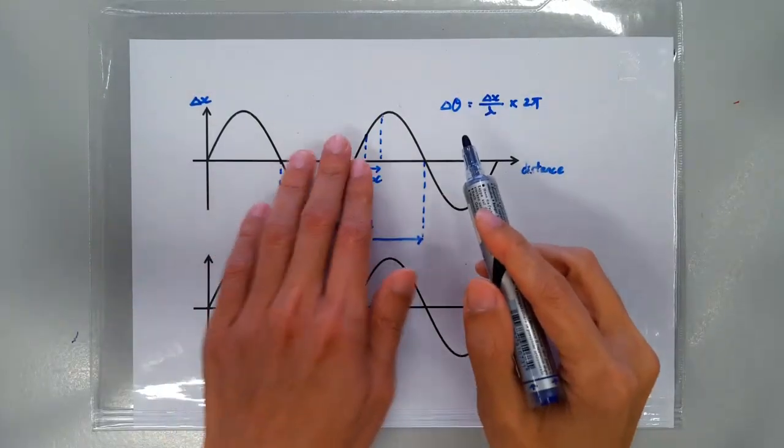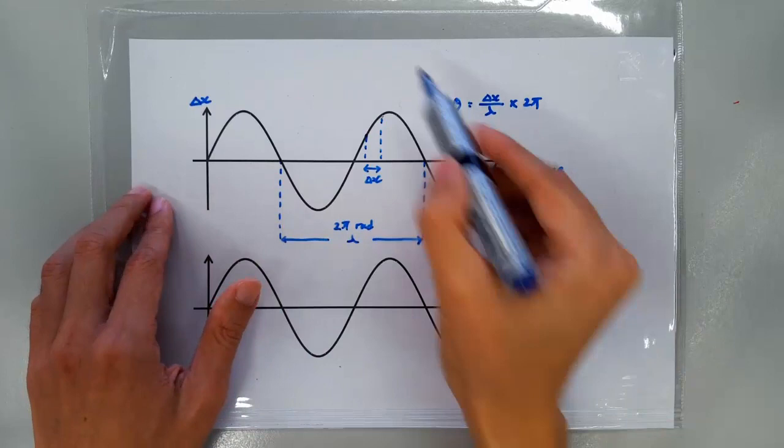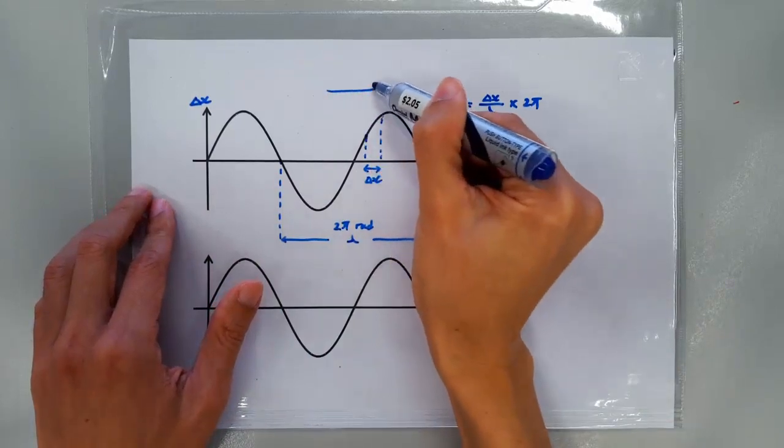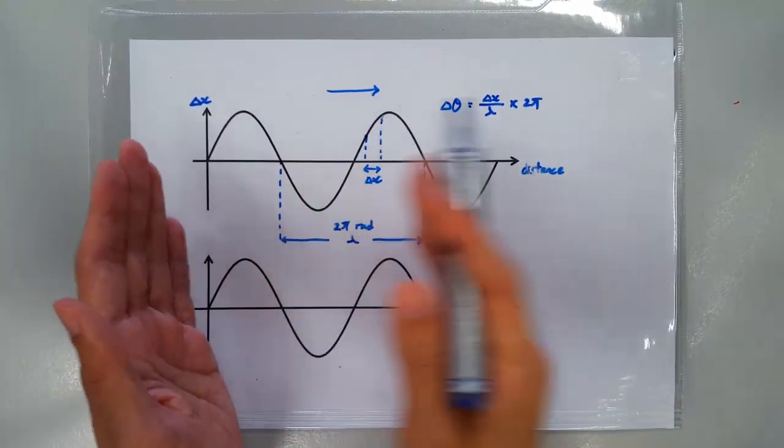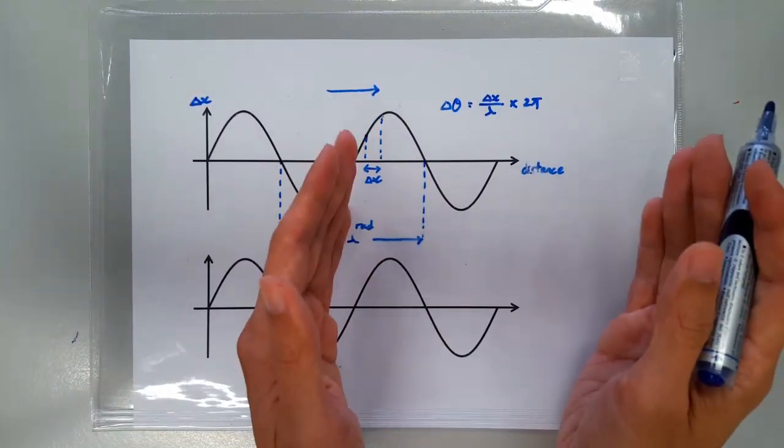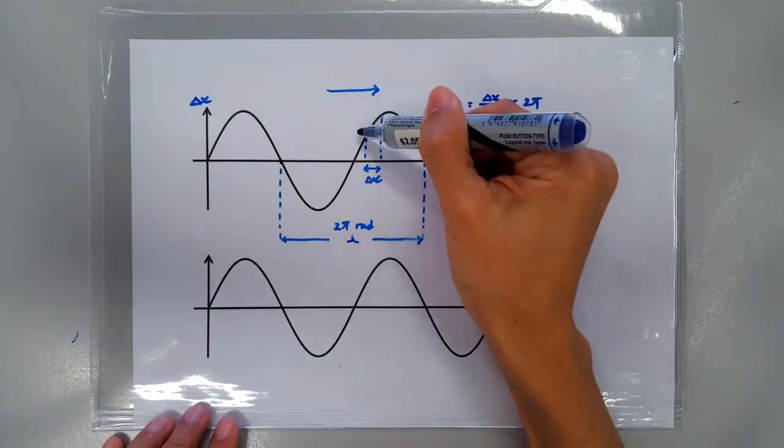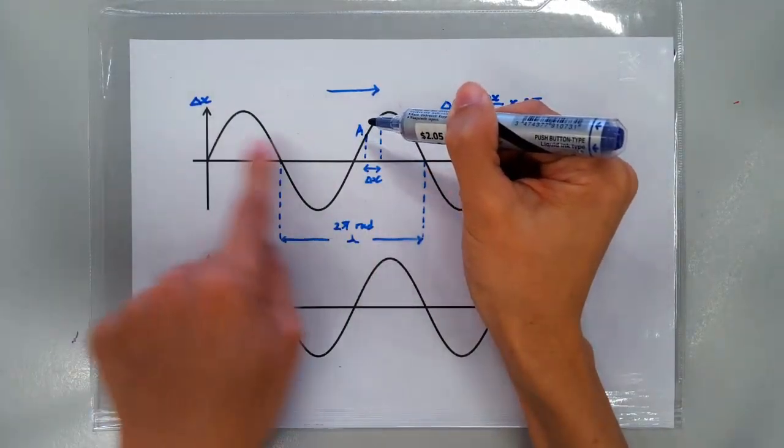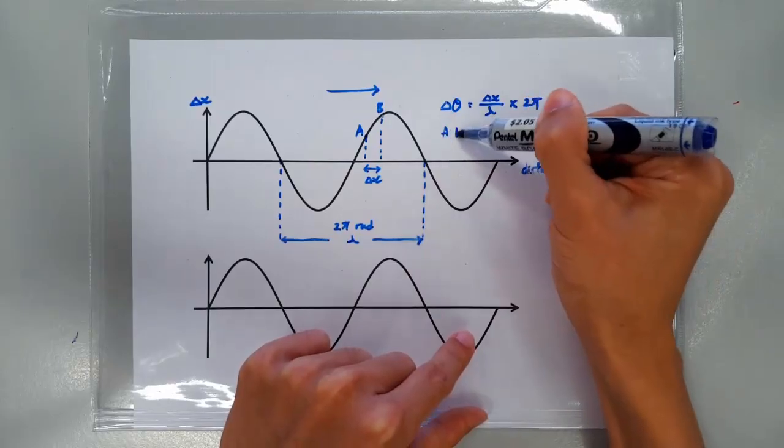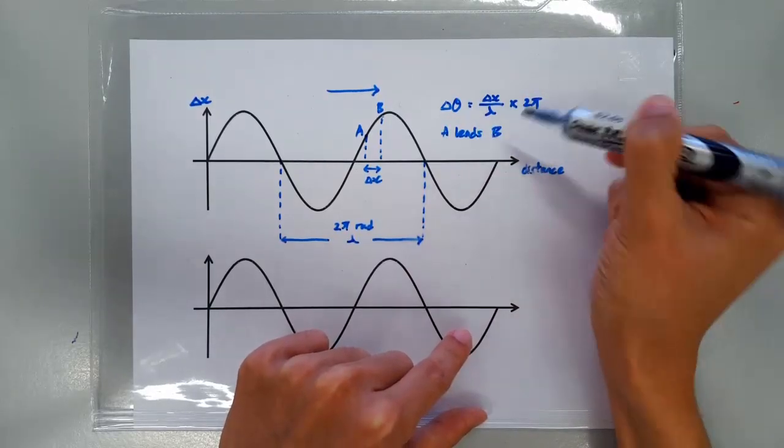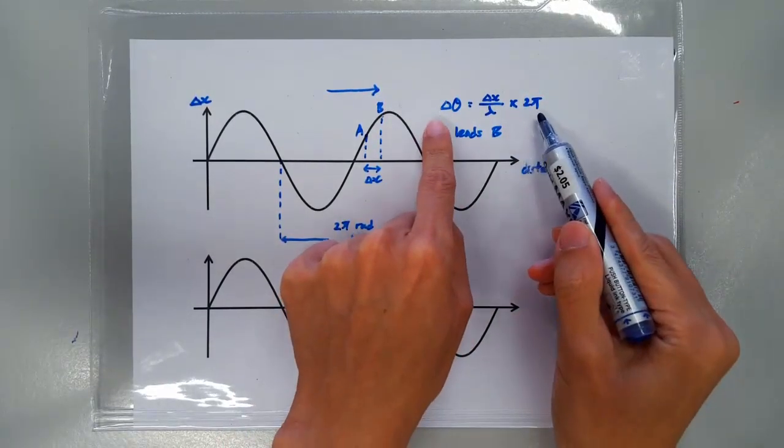By the way, which point is leading which point? Suppose the wave is travelling from left to right. Now, remember, nearer the wave source are the leaders, further away from the wave source are the laggers. So, point A is nearer to the source than point B. So, A must be leading B by a phase difference of this amount here.